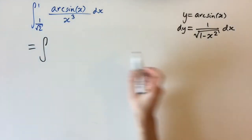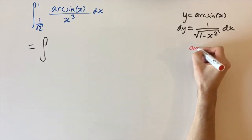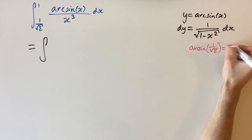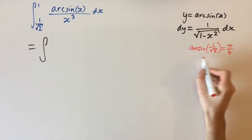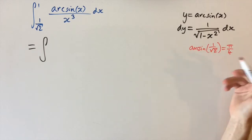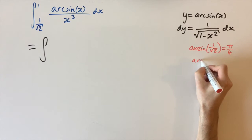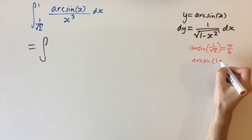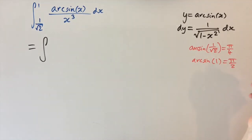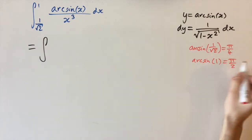We substitute the x-limits to get the corresponding y values. The arcsin of 1 over root 2 equals pi over 4, because sine of pi over 4 equals 1 over root 2 — that's 45 degrees. For the upper limit, arcsin of 1 equals pi over 2, which corresponds to 90 degrees, since sine of pi over 2 equals 1.